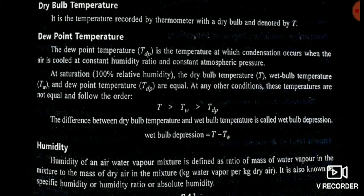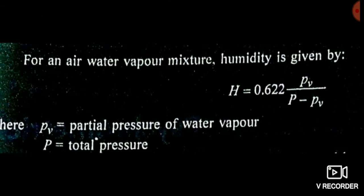For example, if we compare Delhi and Mumbai, Mumbai is much more humid than Delhi because it is a coastal region with seas nearby, so the atmosphere has a lot of water vapor — high kg of water vapor per kg of dry air. This is also called absolute humidity or specific humidity. When the term 'humidity' is used, this is what it refers to, and it is represented by H.